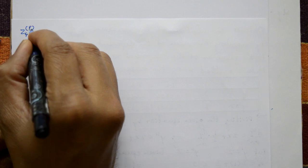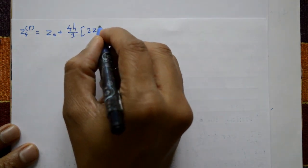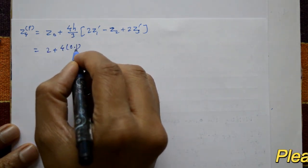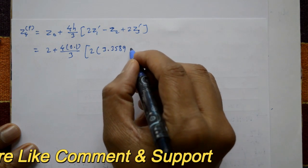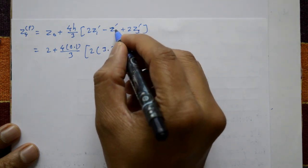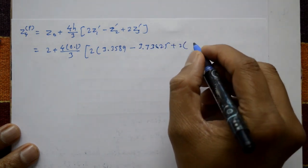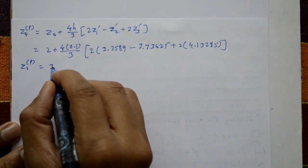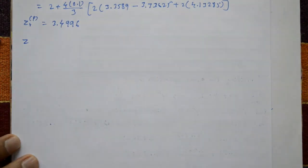Next, the predictor formula for z4 is: z4(P) = z0 plus (4h/3) times (2z1 dash minus z2 dash plus 2z3 dash). Substituting z0 = 2, h = 0.1, z1 dash = 3.3589, z2 dash = 3.73625, z3 dash = 4.13285. The z4 predictor formula value is 3.4996.